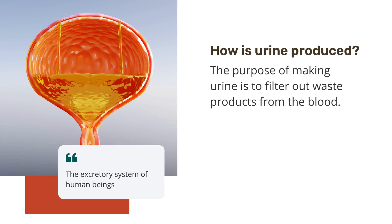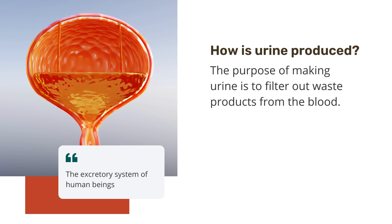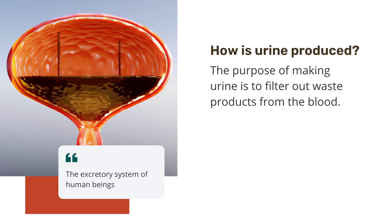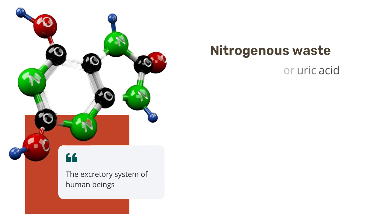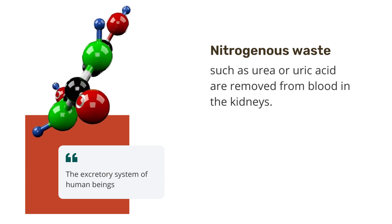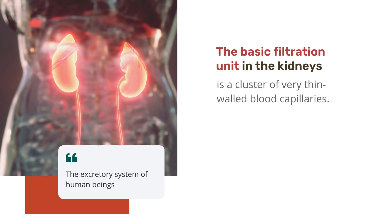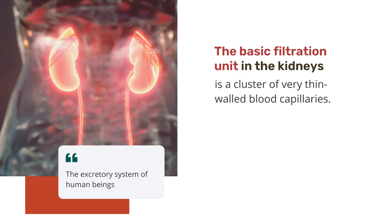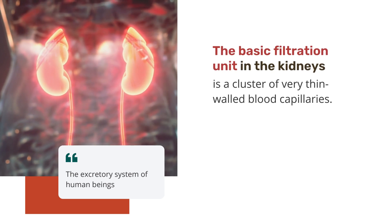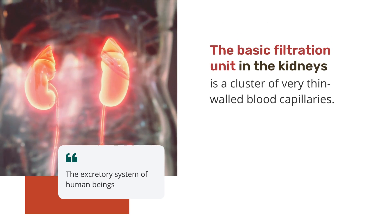Now, how is urine produced? The purpose of making urine is to filter out waste products from the blood. Just as carbon dioxide is removed from the blood in the lungs, nitrogenous waste such as urea or uric acid are removed from the blood in the kidneys. It is then no surprise that the basic filtration unit in the kidneys, like in the lungs, is a cluster of very thin-walled blood capillaries.